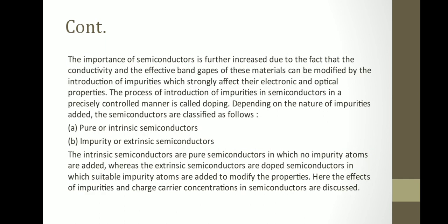The importance of semiconductors is further increased because their conductivity and effective band gaps can be modified by the introduction of impurities, which strongly affect their electronic and optical properties. The process of introducing impurities into semiconductors in a precisely controlled manner is called doping. By adding impurities, the number of electrons or holes increases, and this process is called doping.